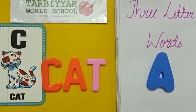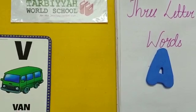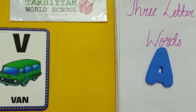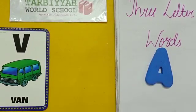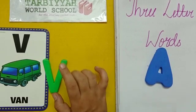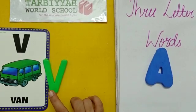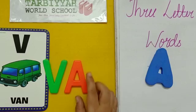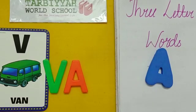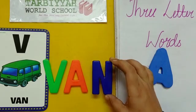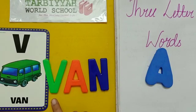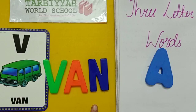Now come to the next word. What is this? Van. V-A-N. The sound of letter V is V. All of you repeat with me: V, A, N — van. V-A-N, van.